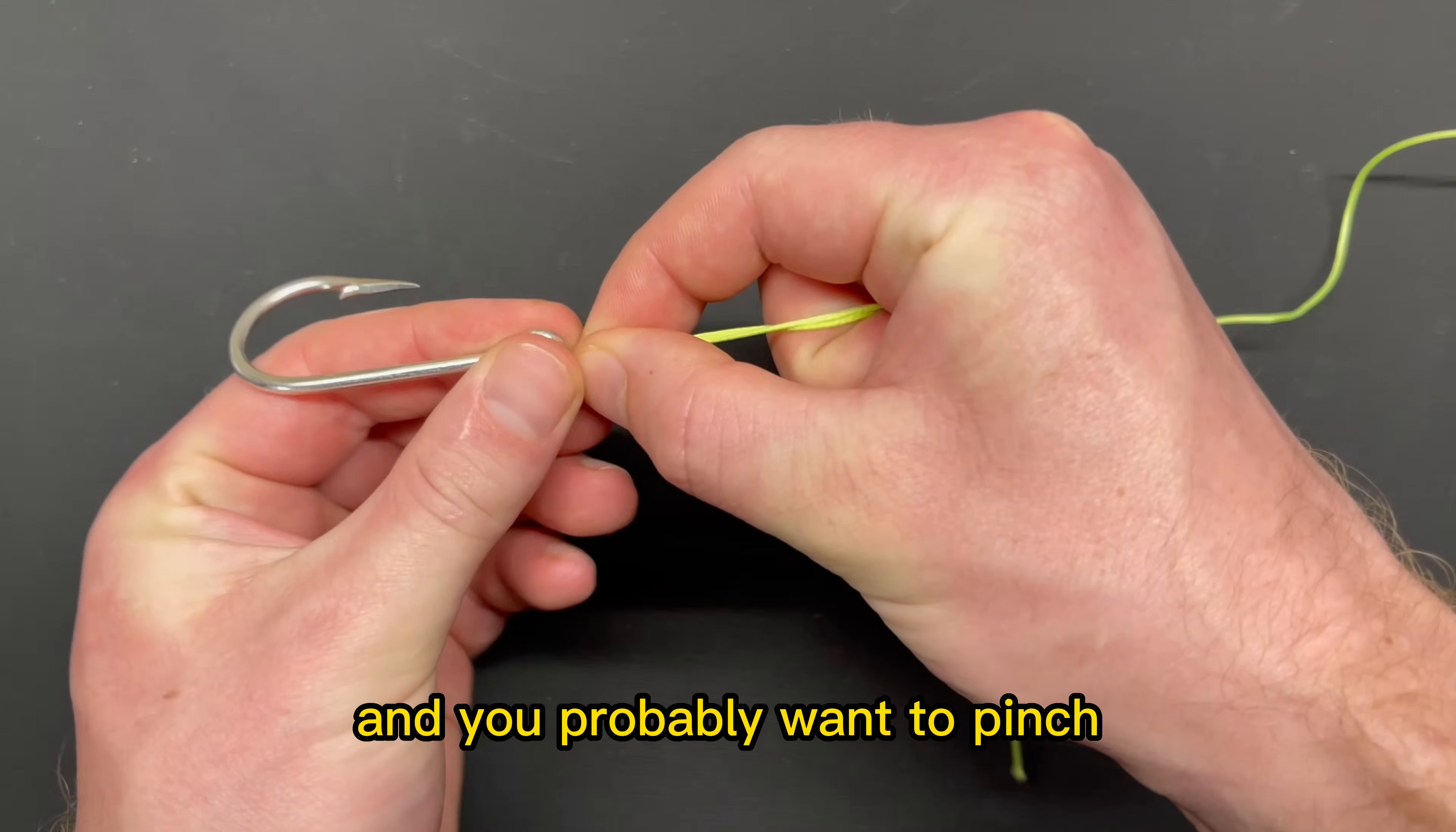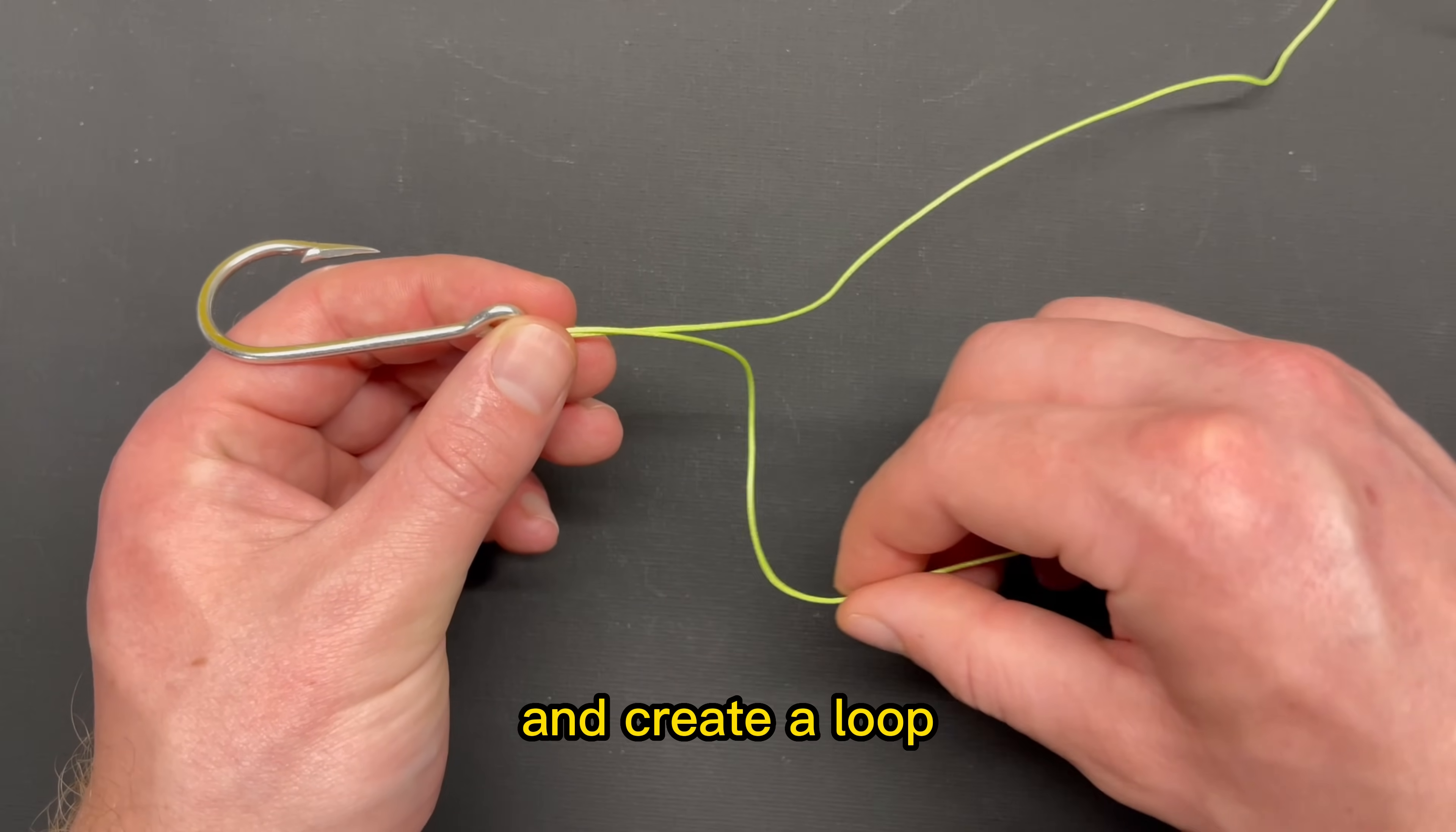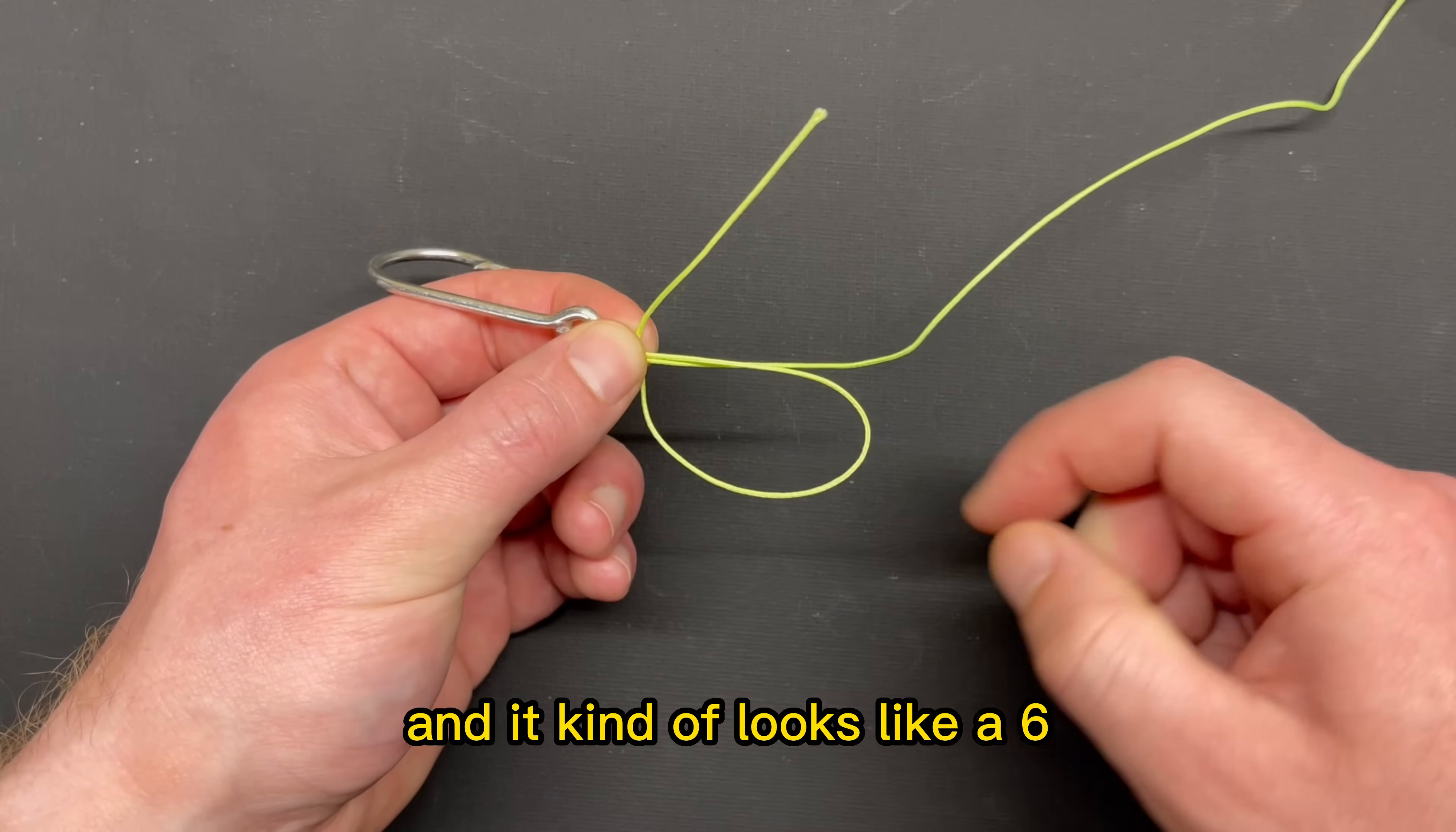You probably want to pinch or otherwise secure these two lines together, because the next thing that you're going to do is take your tag end and create a loop down and below your main line. So you have your tag end and your main line together, and now you've created this loop. And it kind of looks like a six.